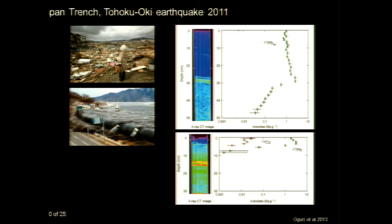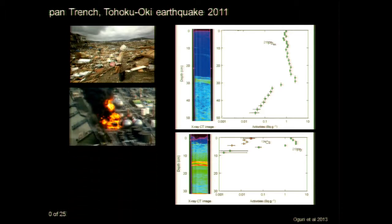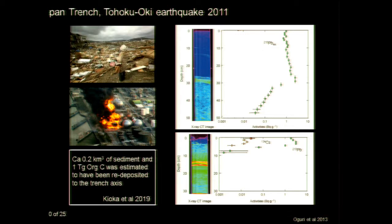We also found cesium-134, a very short-lived isotope that could only come from the Fukushima nuclear power plant. So four months after the incident, we could find material from that event on the seafloor, telling us something about the connectivity of these great depths with the coastal ocean and terrestrial carbon sources. A recent paper estimated that a staggering one teragram of organic carbon was deposited during this event in the trench. Because it was also enriched with dead animals and other material from the coastal ocean, it could sustain elevated bacterial activity for quite a while.